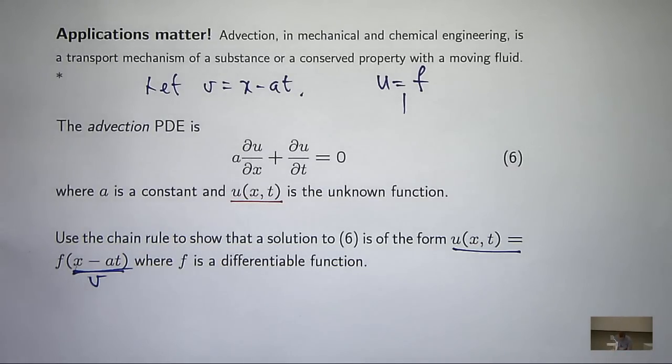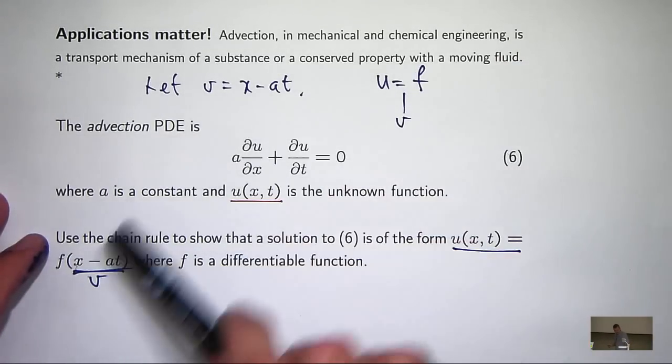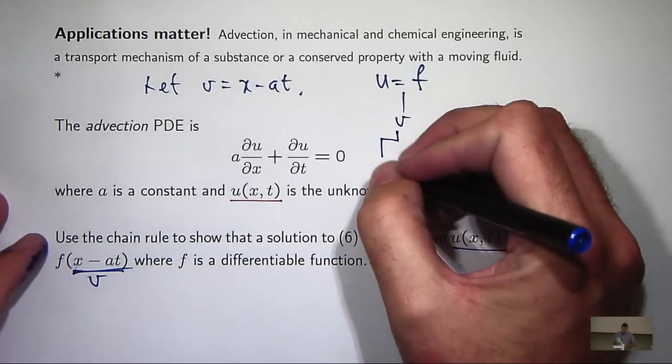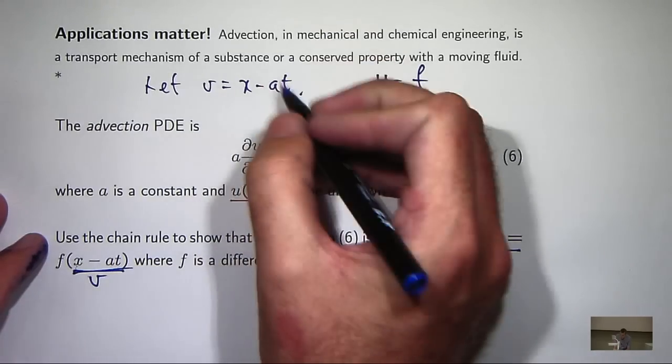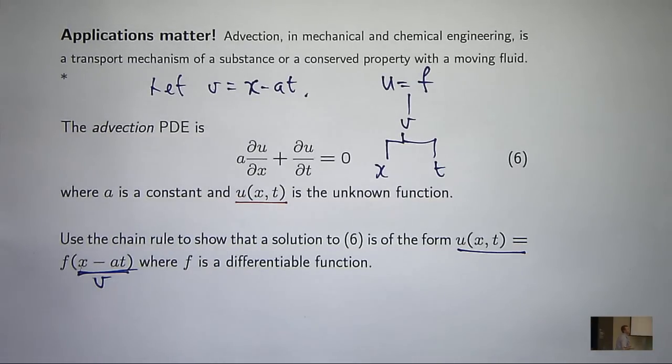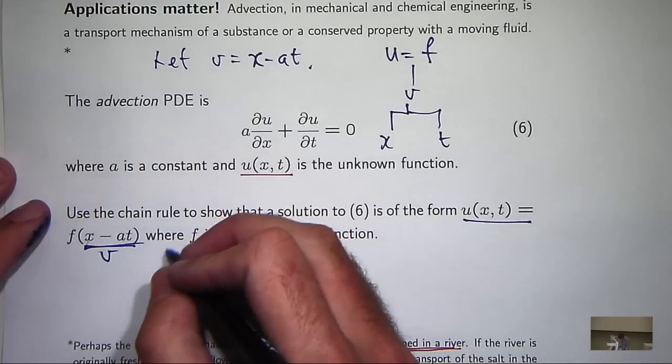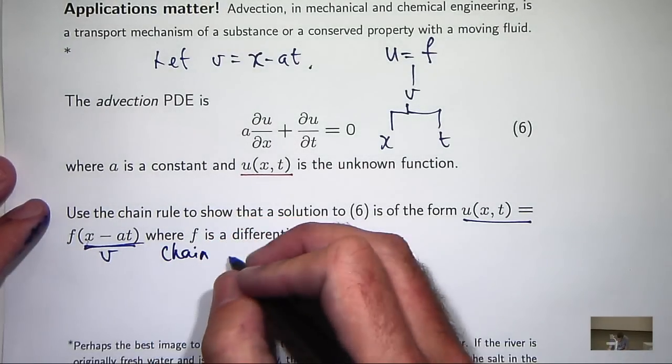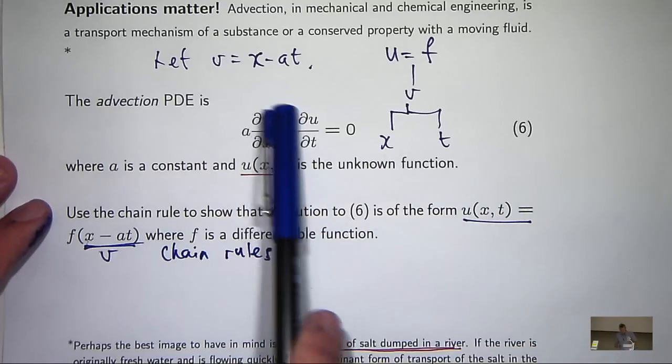So to set up the chain rule, I notice that f depends on v, and v depends on two things, x and t. Remember, a is a constant. We don't know what it is, but it's just a constant. So to set up our chain rule, we just work from the top to the bottom. All right, so our chain rules are the following. Basically you want to calculate this derivative and this derivative.